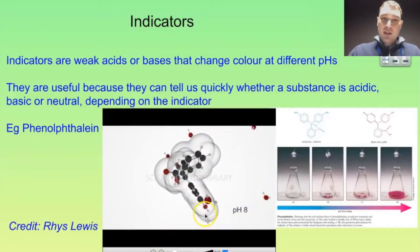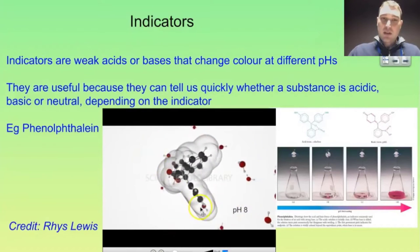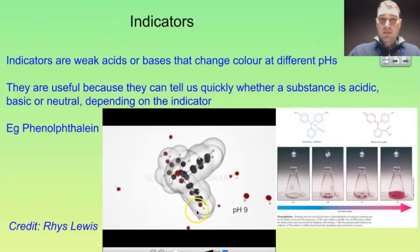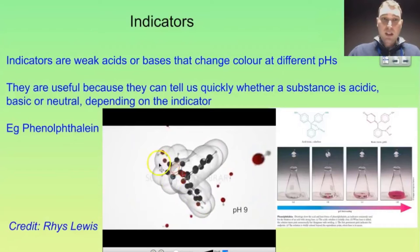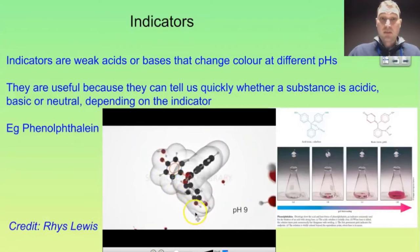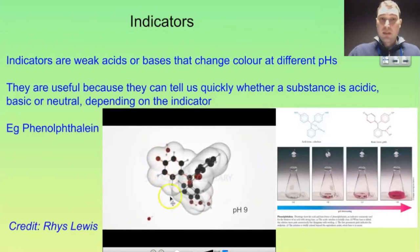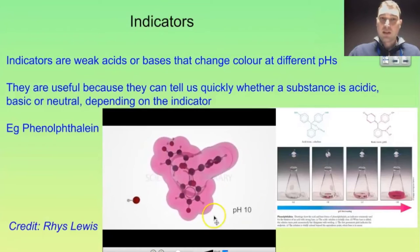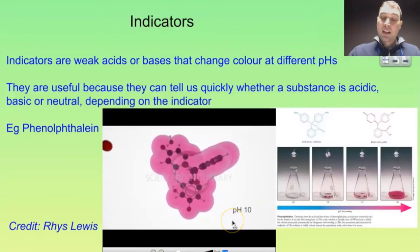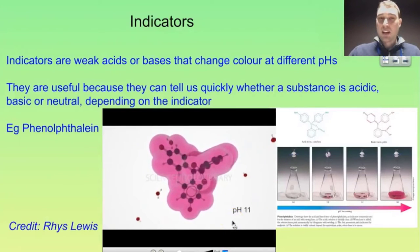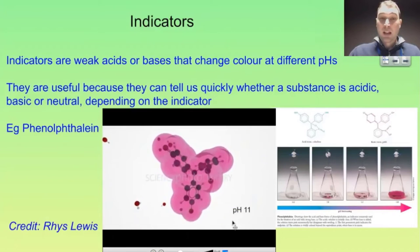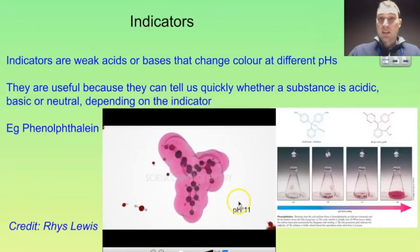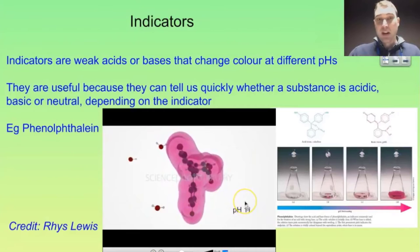As that happens, we get a change in some of the bonds on the phenolphthalein molecule, and when that happens we get a slight change in shape. That change in shape leads to a change in the way that light reflects off of the phenolphthalein molecule. In this case, it reflects wavelengths of light that make up pink in our brain.